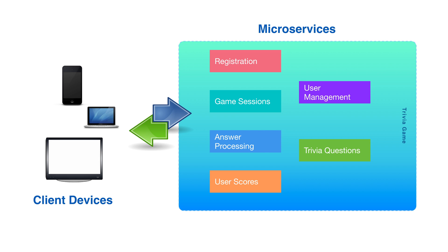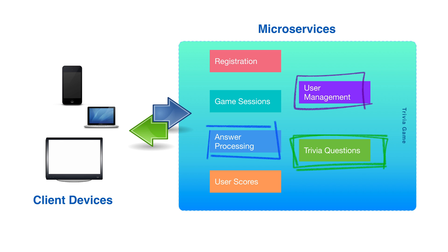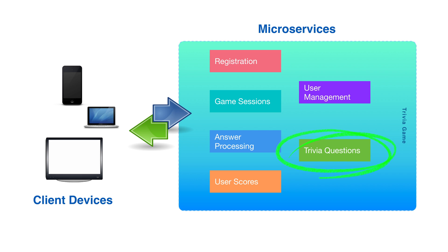Imagine we're creating an online trivia game. The game will likely need to handle many tasks — we'll need code to handle our users, code to get new questions, code to handle processing answers, and probably several other functions not listed here. Each function could map to its own microservice. To start, we'll focus on the TriviaQuestions service. What we learn from the TriviaQuestions service, we can apply to other services as we create them later on.